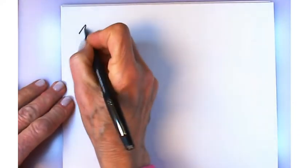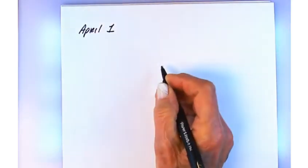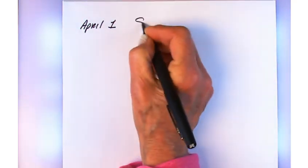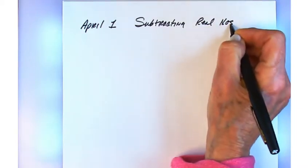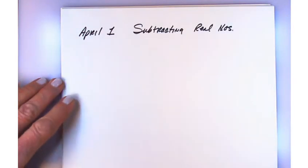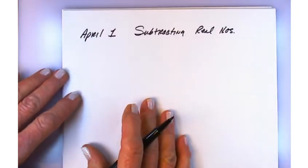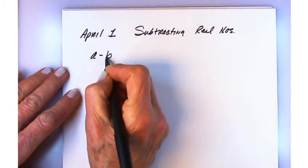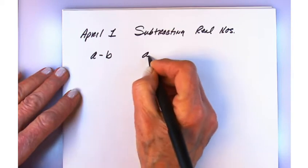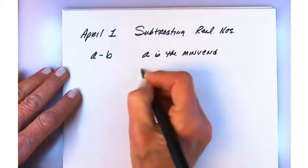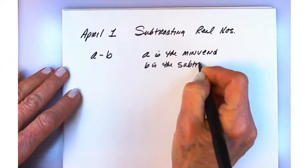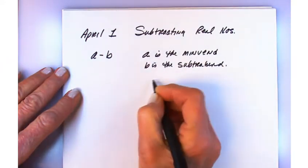Good morning everyone, welcome back to Math 1050. Today is April Fool's Day but this is an actual lecture — we're looking at subtracting real numbers. We talked about adding real numbers on Monday, so now we're going to look at subtracting. Subtraction looks like a minus b, where a is the minuend, b is the subtrahend, and the answer is the difference.